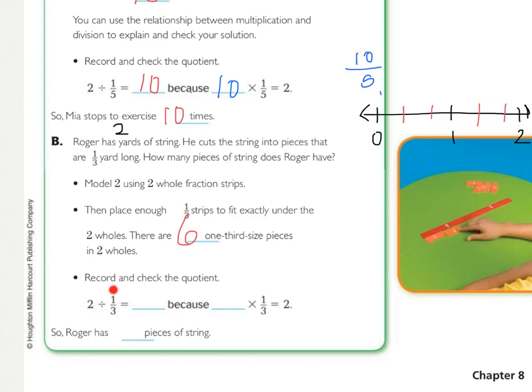And then we're going to check it. So two divided by one third equals six. And to check our quotient, we know that that can be true because six times one third equals two. Because, again, you just multiply six times one, the whole number times the numerator, we keep the same denominator, and that reduces down to two. So how many pieces of string did Roger end up with? He had six pieces of string.